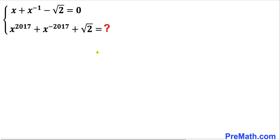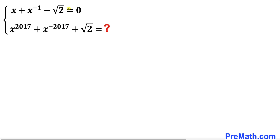Let's get started. First, let's focus on x power negative 1. This could be written as 1 divided by x, and likewise x power negative 2017 could be written as 1 divided by x power 2017. So this first equation could be written as x plus 1 divided by x, moving square root of 2 to the right hand side, giving us square root of 2.